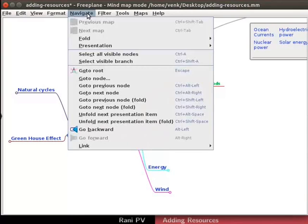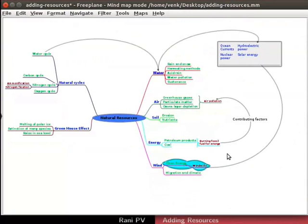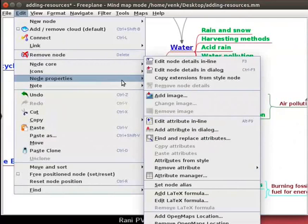Click on Navigate, Fold Unfold All to unfold and show all the nodes. We can add multiple feature attributes to a node in Freeplane. Select Sustenance and click on Edit Node Properties.